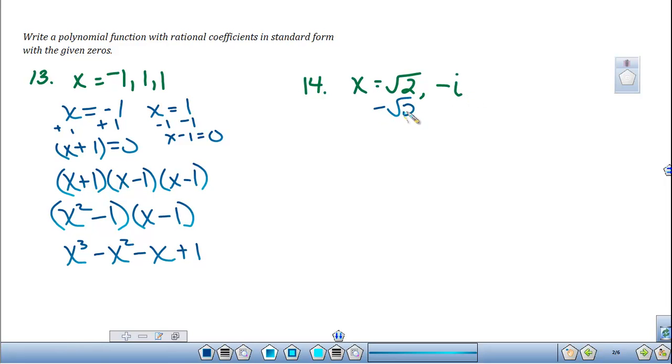So we know that negative square root of 2 is also a zero of this function. In like manner, the imaginary root theorem says pretty much the same thing, that if you have an imaginary root, then its conjugate is also a root. So positive i. So we have a total of four roots, which means this is going to be a fourth degree equation when we're finished.